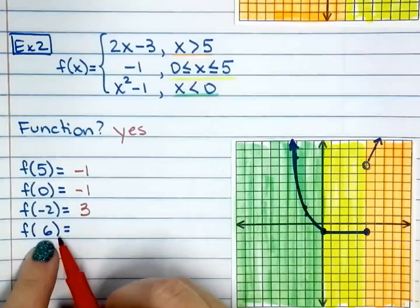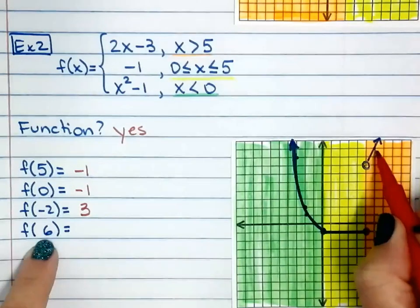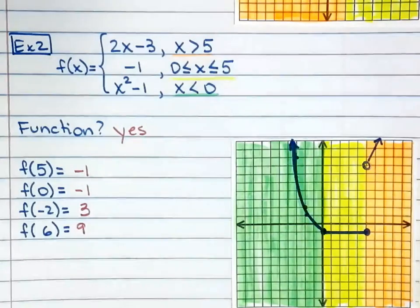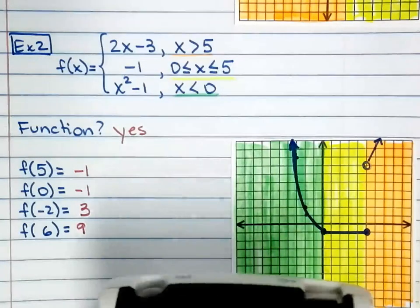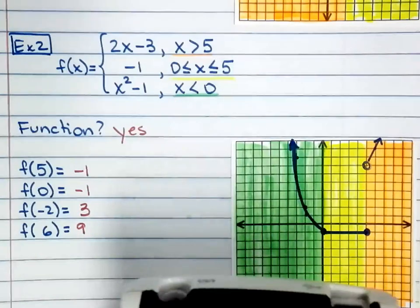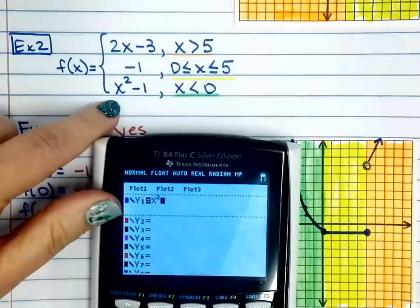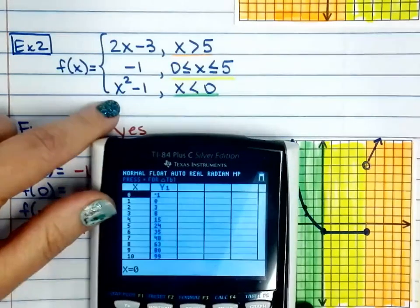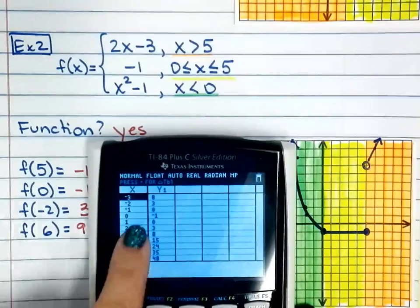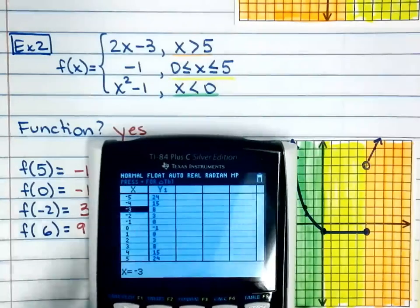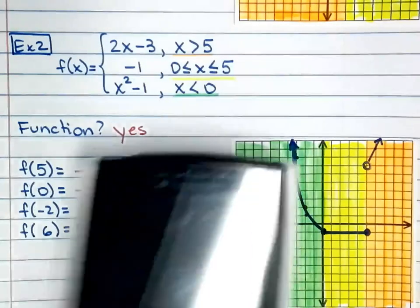What is y when x is 6? x is 6 right there — y is 9. I don't expect you to know how to graph a parabola by heart, so go ahead and punch that in the calculator. When you go to the table, you have the points right there: 0, negative 2, 3, and so on. When in doubt, just grab your calculator. That's all I have for you, hope this helps. Bye!